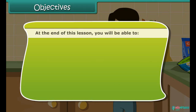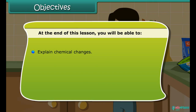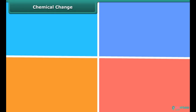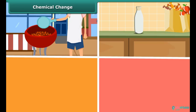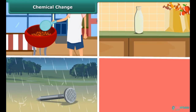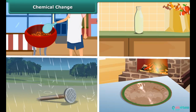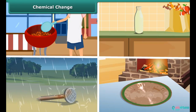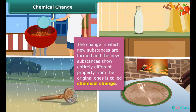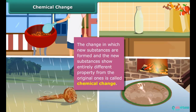At the end of this lesson you will be able to explain chemical changes and give examples of chemical changes. Burning of coal, spoilage of milk, rusting of iron, and formation of green film on copper are chemical changes. A substance undergoes a chemical reaction during a chemical change.